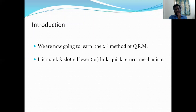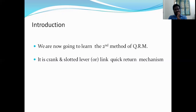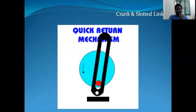The second mechanism is the crank and slotted lever quick return mechanism, which we have already observed in the animation of the shaping machine. In the diagram, the slotted lever oscillates due to the rotational motion of the crank. As the crank rotates, the slotted lever performs oscillations. From these oscillations, we obtain the reciprocating motion of the ram.